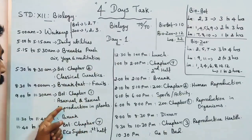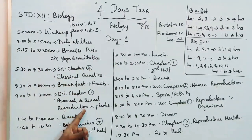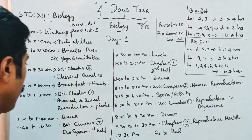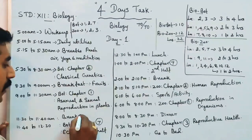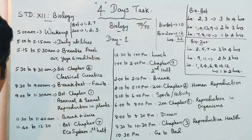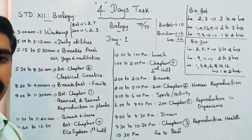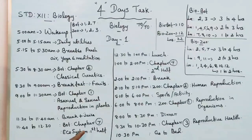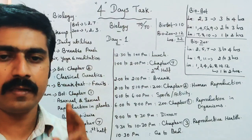Chapter 1 covers Asexual and Sexual Reproduction in Plants. From 11:30 to 11:40am, take a 10-minute break — have juice for a healthier routine. Then from 11:40 to 12:30pm — about 50 minutes — cover one unit completely. Then study Chapter 7: Ecosystem, and Chapter 9 first half.